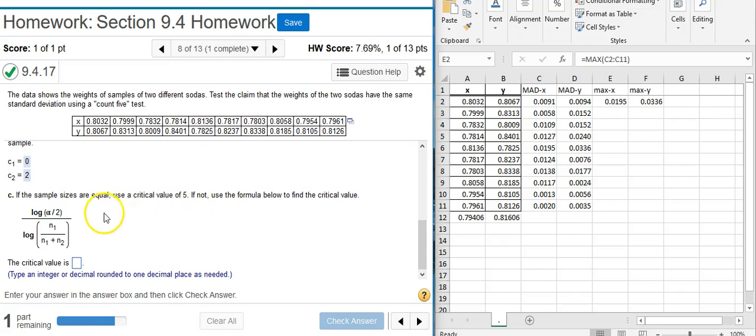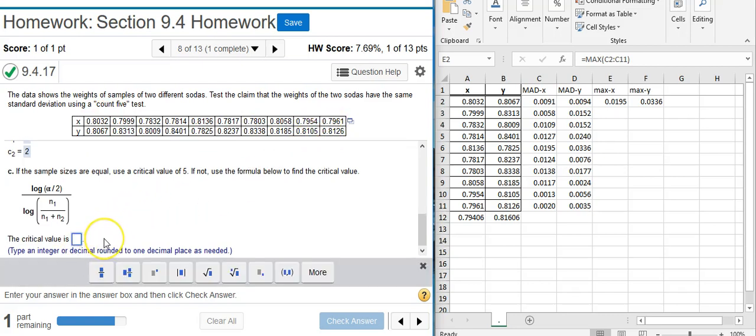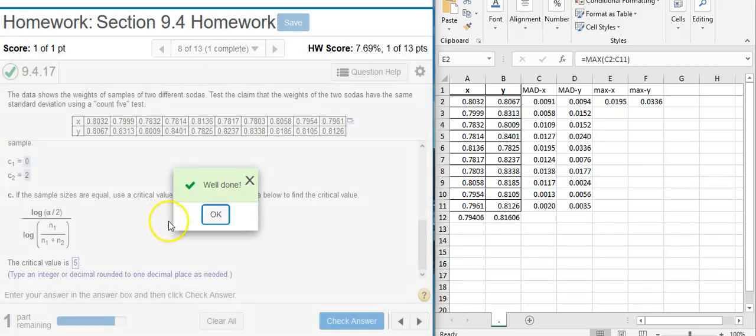Okay. Part C says, if the sample sizes are equal, use a critical value of 5. If not, use the formula below to find the critical value. Many students, when encountering this problem, they just look at this hairy equation and think, oh my gosh, I must have to use this. But the instructions say, if the sample sizes are equal, use a critical value of 5. Well, we've got 10 X values and we've got 10 Y values. So the sample sizes are the same. That means the critical value is going to be 5. I don't have to use that formula at all. Well done!